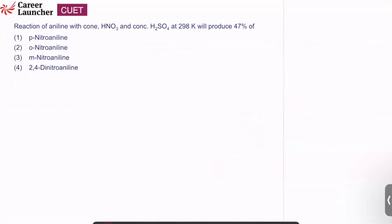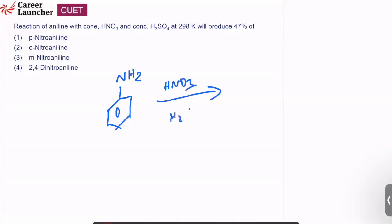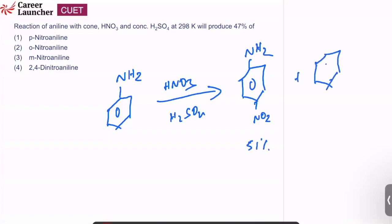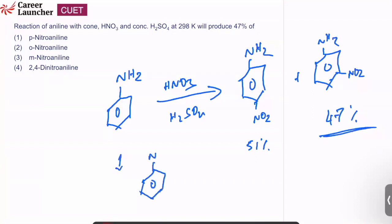Question number 43: reaction of aniline with concentrated HNO3 and concentrated H2SO4 at 298 K produces 47% of meta-nitroaniline. This is because aniline forms an anilinium ion (conjugate acid) under strong acidic conditions, and the NH3⁺ group is a meta-director. So meta-nitroaniline is formed in 47% yield. Answer is option 3. We have discussed this many times in class.